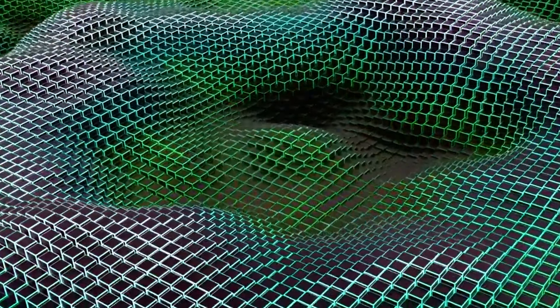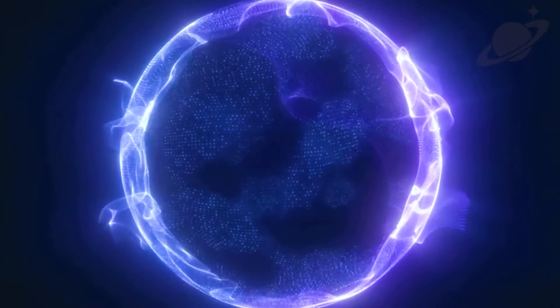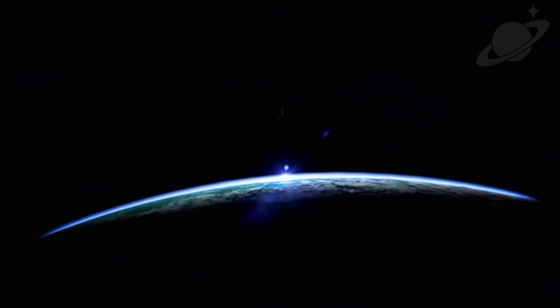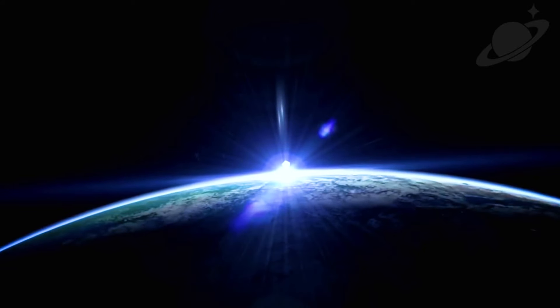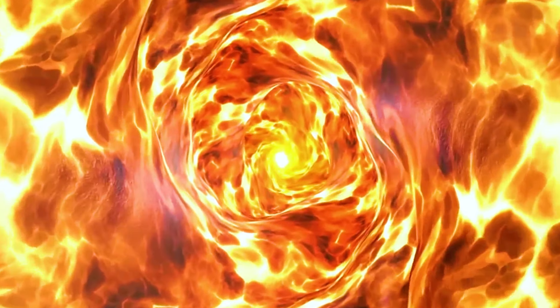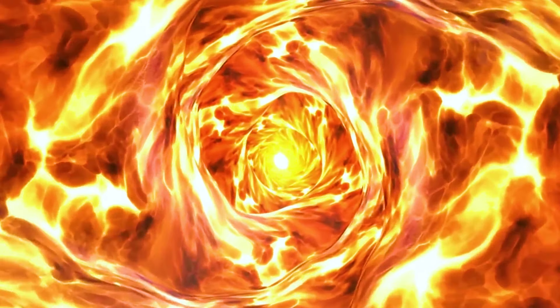But how did such a huge empty space come to be? What happened in the early days of the universe to make this massive void? While we're not entirely sure how voids like this form, there are some interesting theories. One idea revolves around something called cosmic inflation. This theory suggests that right after the Big Bang, the universe expanded really quickly, stretching space itself. During this expansion, tiny fluctuations at the quantum level might have gotten magnified on a cosmic scale, creating areas with higher and lower density in space.